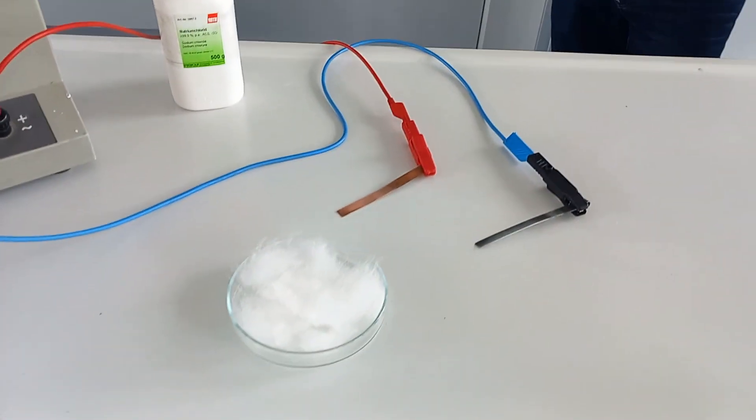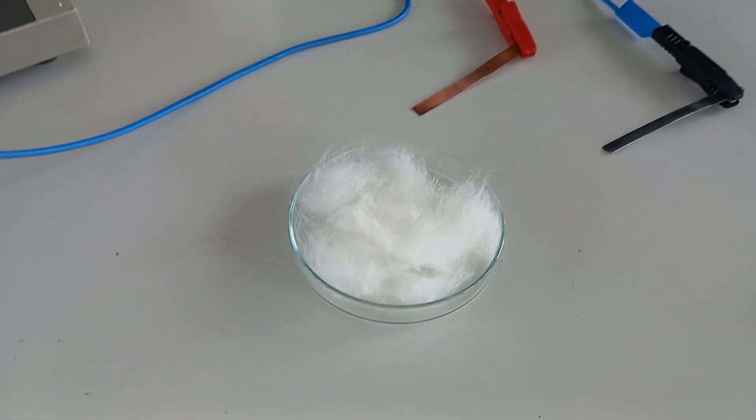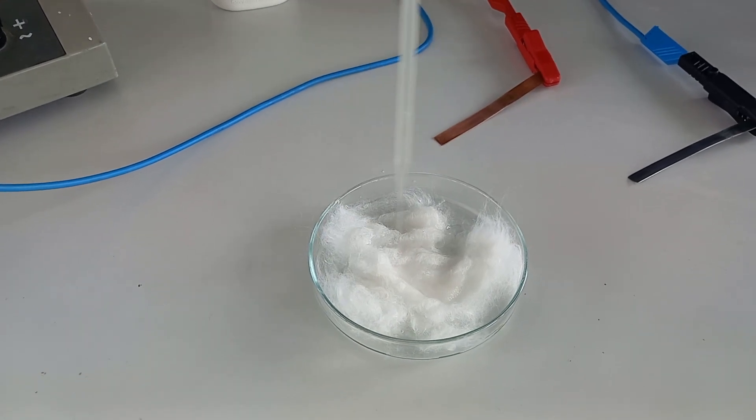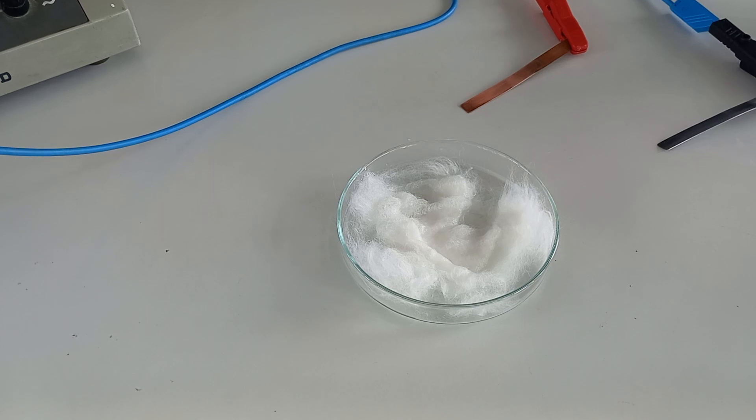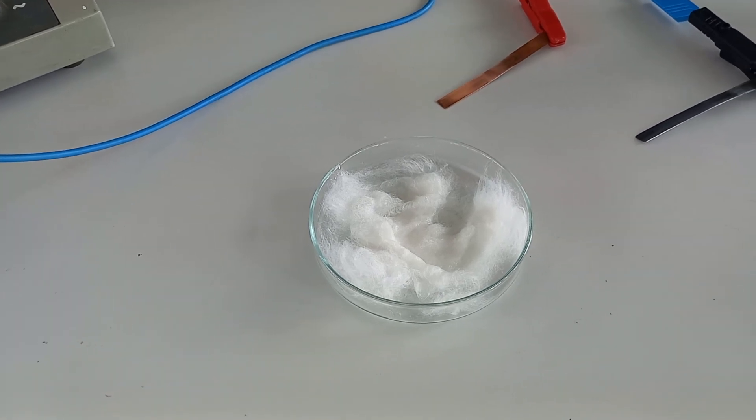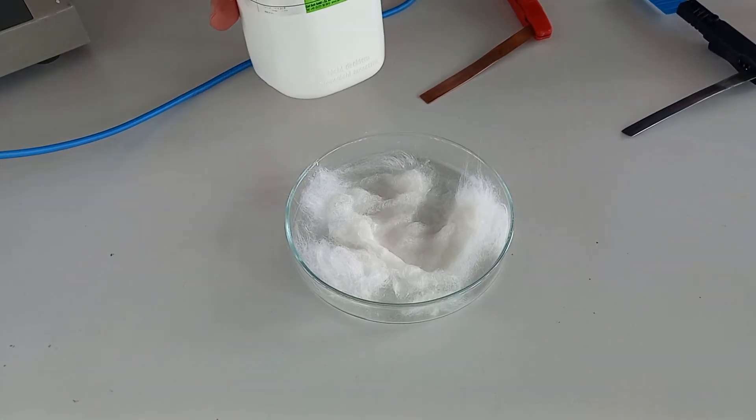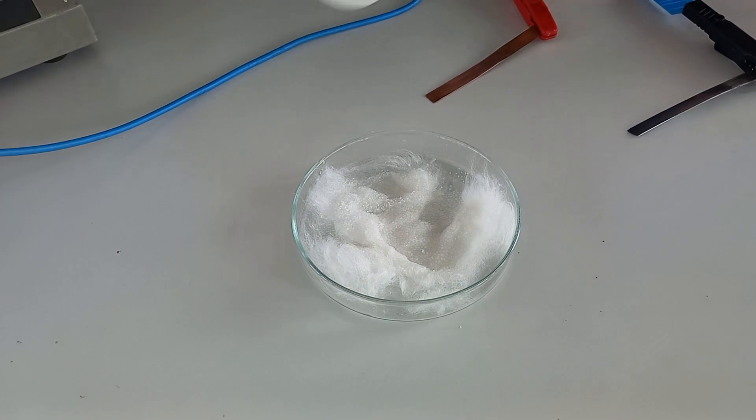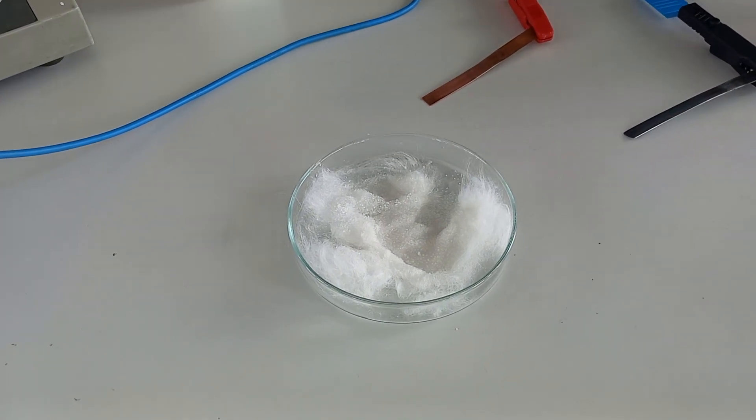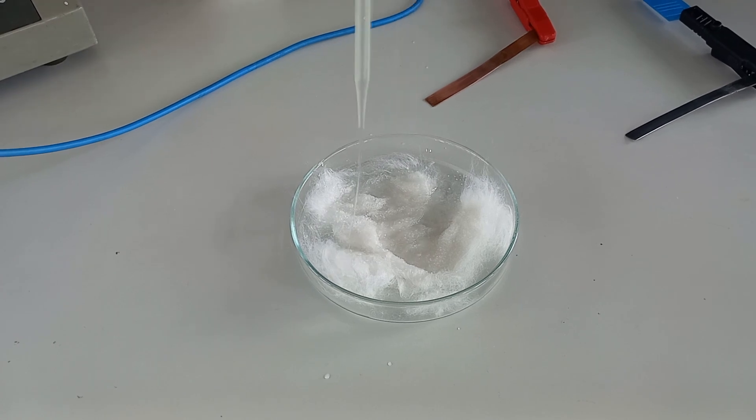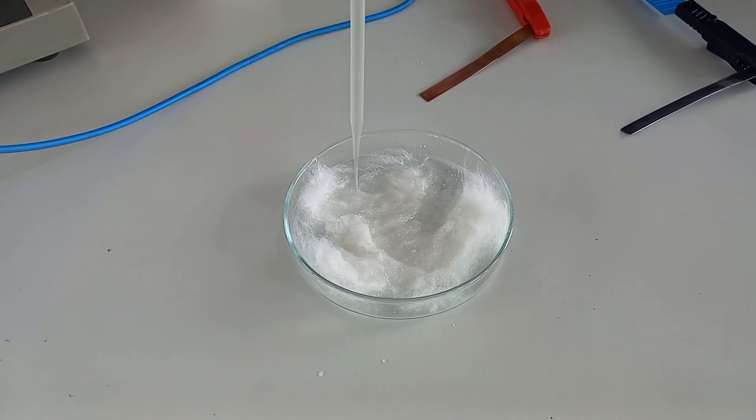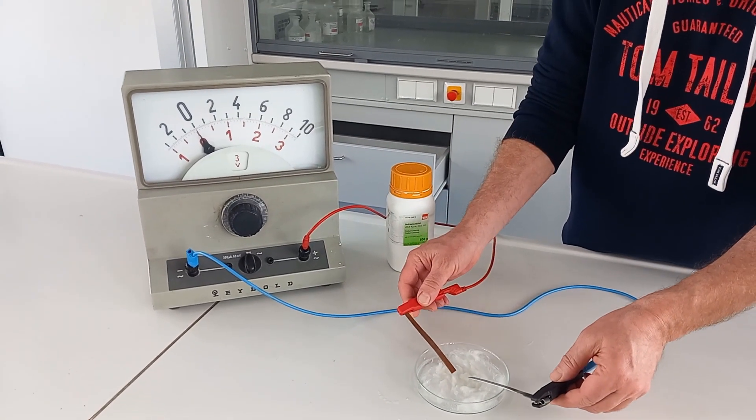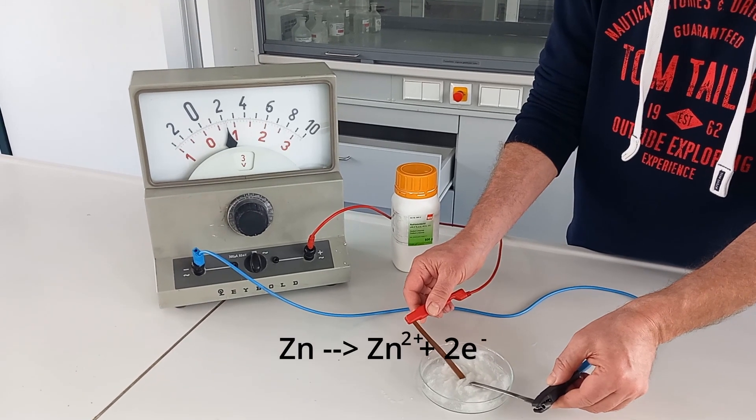The last experiment is a galvanic cell. There is wool in this petri dish. Now we will add salt and water. Now we put in copper and zinc, and as you can see, a voltage is generated.